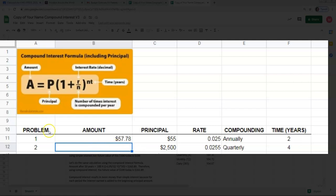We'll do one more and then you can finish the rest of these. This one compounded quarterly. So that will be four times.